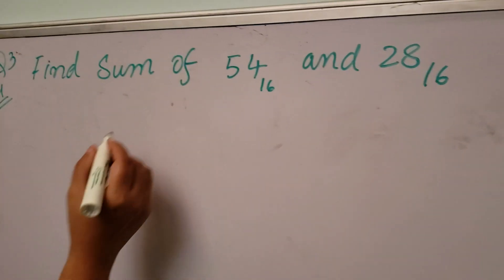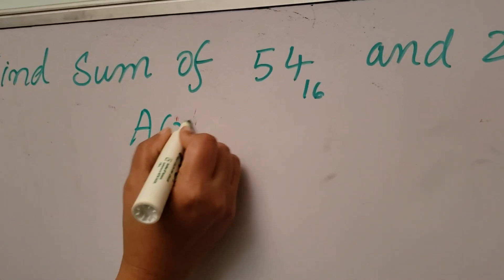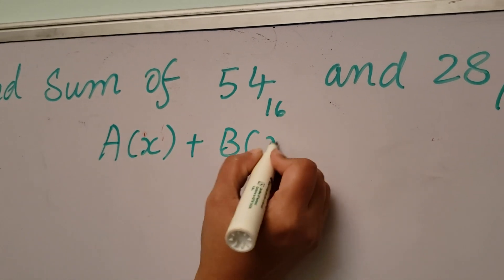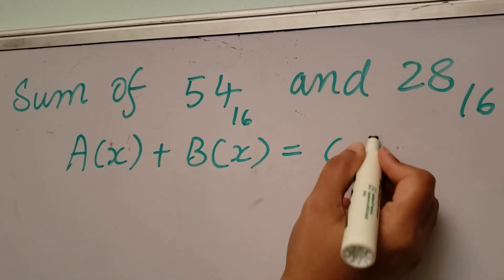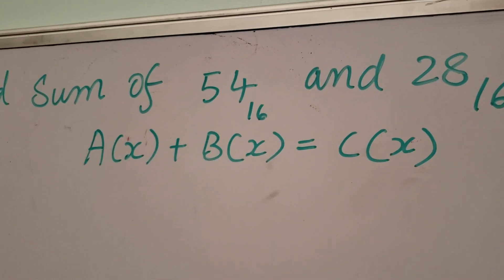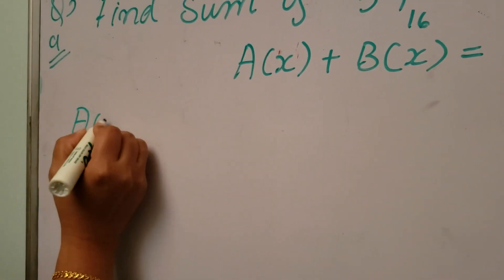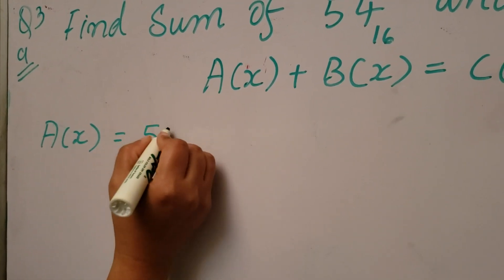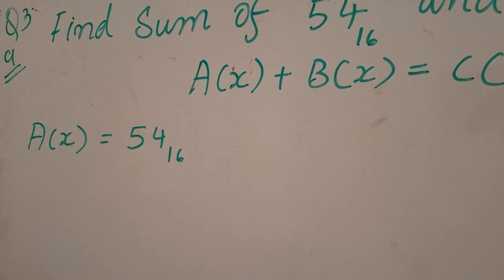According to the formula, A(x) plus B(x) is equal to C(x). Let's look at A(x), which is 54 in hexadecimal.